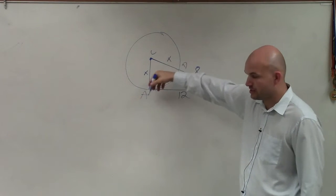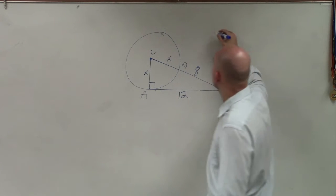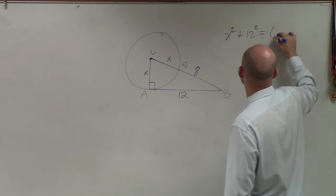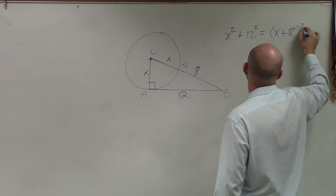Remember, it's leg squared plus leg squared equals hypotenuse squared. So I have x² + 12² = (x + 8)².